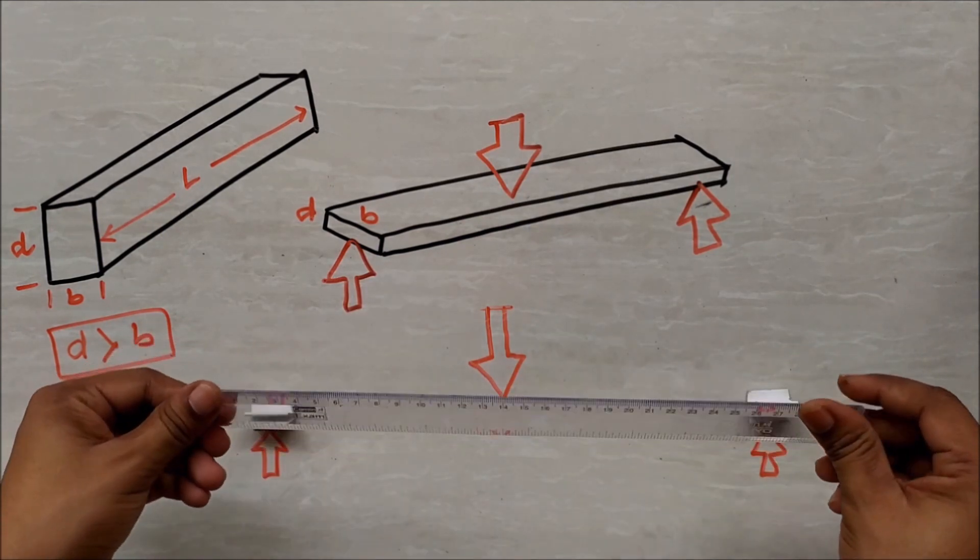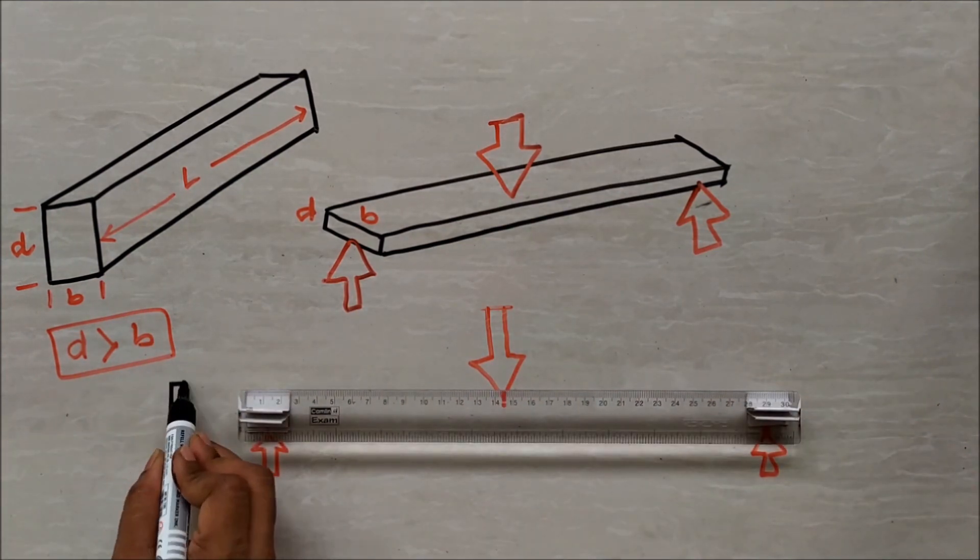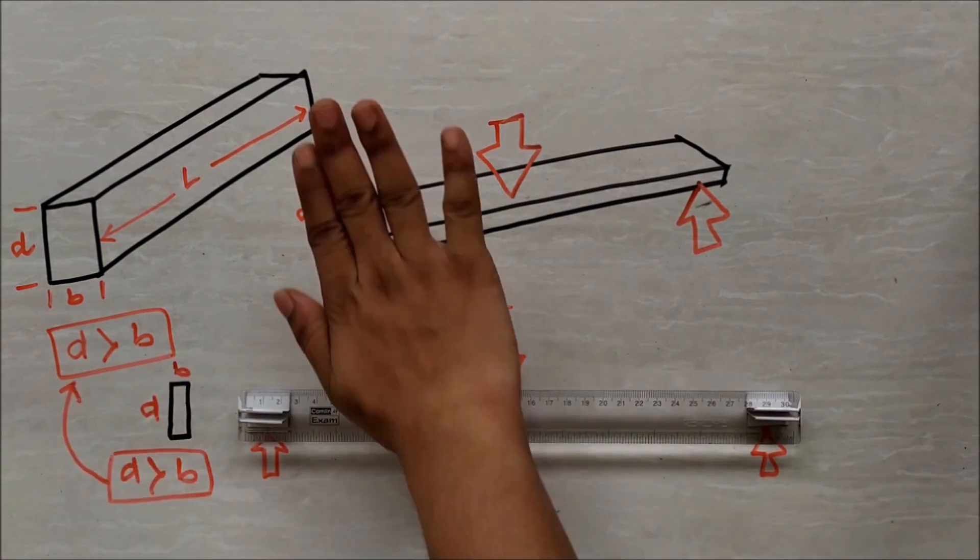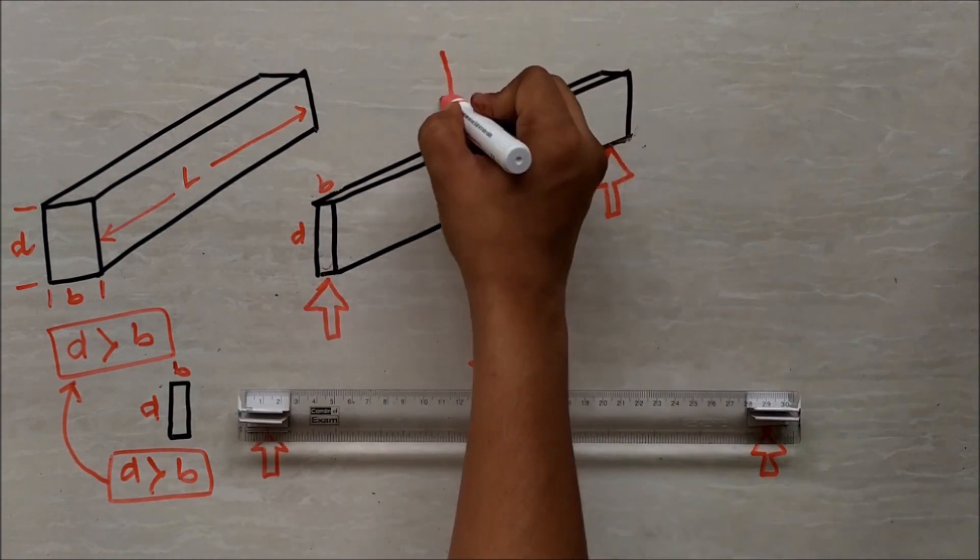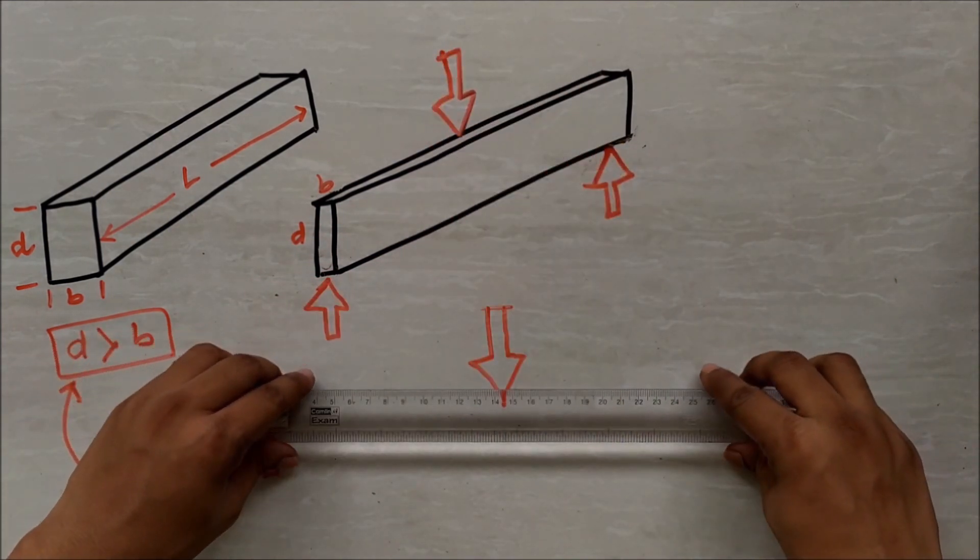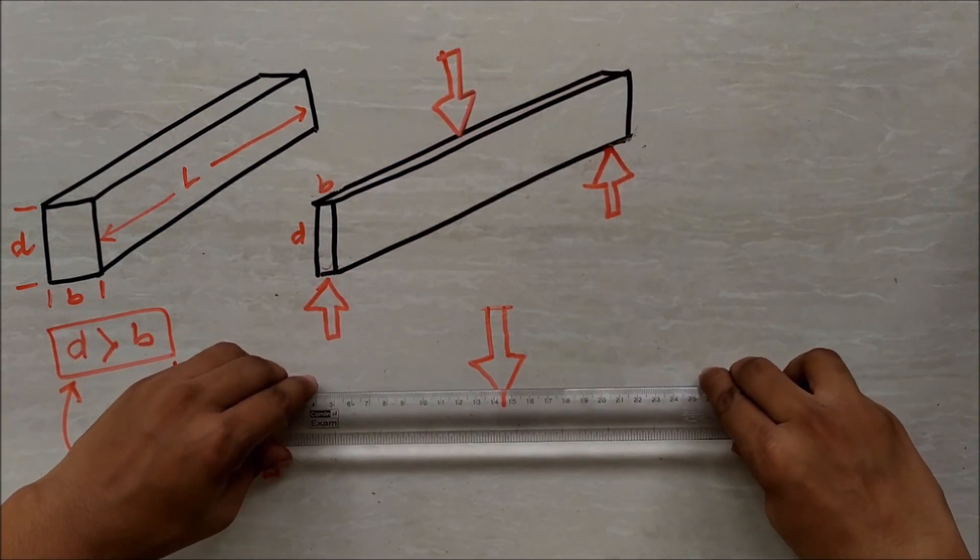Let's see if we alter the width and depth of beam. Now the depth D is greater than the width B. And this is the position of scale and loads right now. What will happen in this case, when the loads will act, it's impossible to bend.